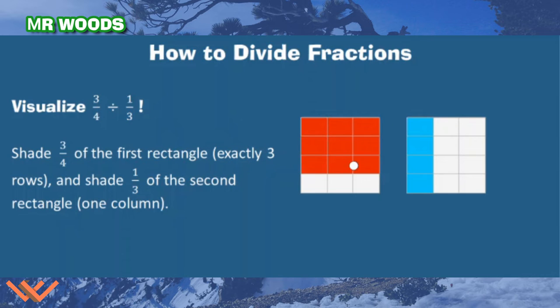So we're going to shade in 3 fourths of the first rectangle, exactly 3 rows. So there's 1, 2, 3 rows. And then we're going to shade in 1 third of the second rectangle. Okay, so you see how that is? We're working with equal parts here, and we're trying to figure this out. How many of these can fit into here?